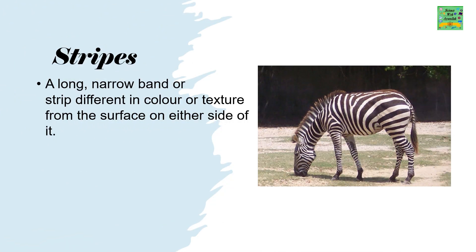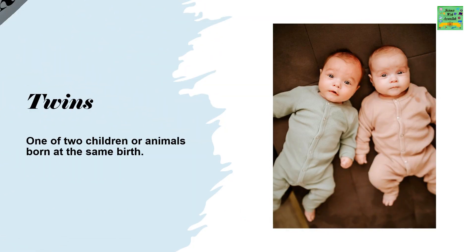Stripes: a long narrow band or strip different in color or texture from the surface on either side of it. Twins: one of two children or animals born at the same time.